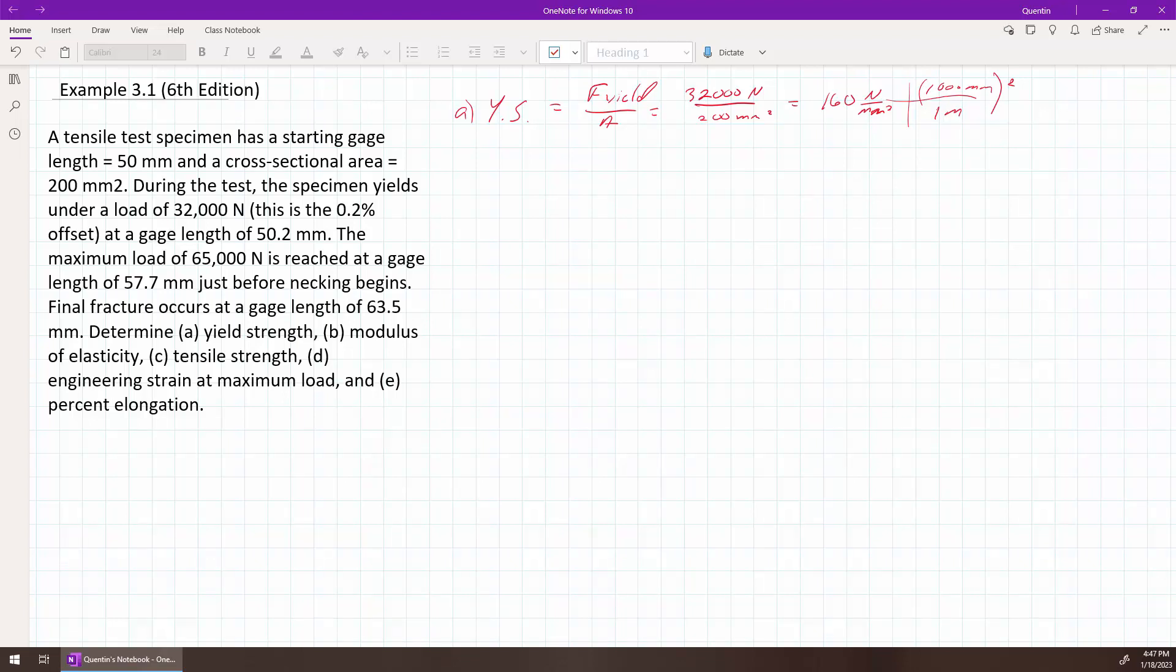But we want our answer in 1 megapascal. So this will give us in pascals, but then we want it in a megapascal. To be in megapascals, you have to divide by 10 to the 6th. So it's the same thing. So it turns out a newton per millimeter squared is 160 megapascals. So that is our yield strength. So that's part A, 160 megapascals.